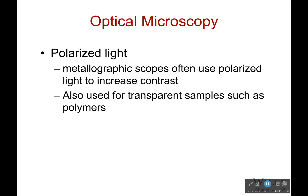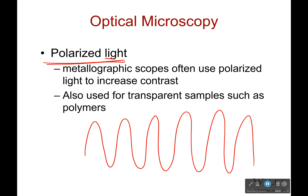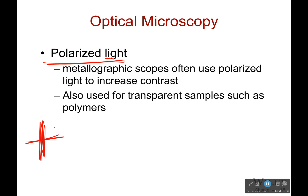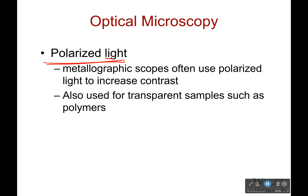Now, another note: when we do optical microscopy, we often use polarized light. Polarization simply means that light is a wave, but normally the wave can be oriented in any direction. What we do to improve contrast is filter out all orientations except one. Having a single direction of polarization helps us achieve better contrast. It's also really helpful for transparent samples, because it can reduce how much light is reflecting and being refracted by non-polarized light.